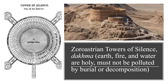As a religion, Zoroastrianism teaches that earth, fire, and water — the fundamental elements — are holy, and they must not be polluted by burial or decomposition. As such, Achaemenids who followed Zoroastrianism practiced unique burial rites involving towers of silence. Towers of silence essentially were open-air charnel houses in which the bodies of the newly deceased would be placed. These bodies would be left to decompose in the open air, and carrion birds like vultures would eat the flesh of the dead until only the bones remained.